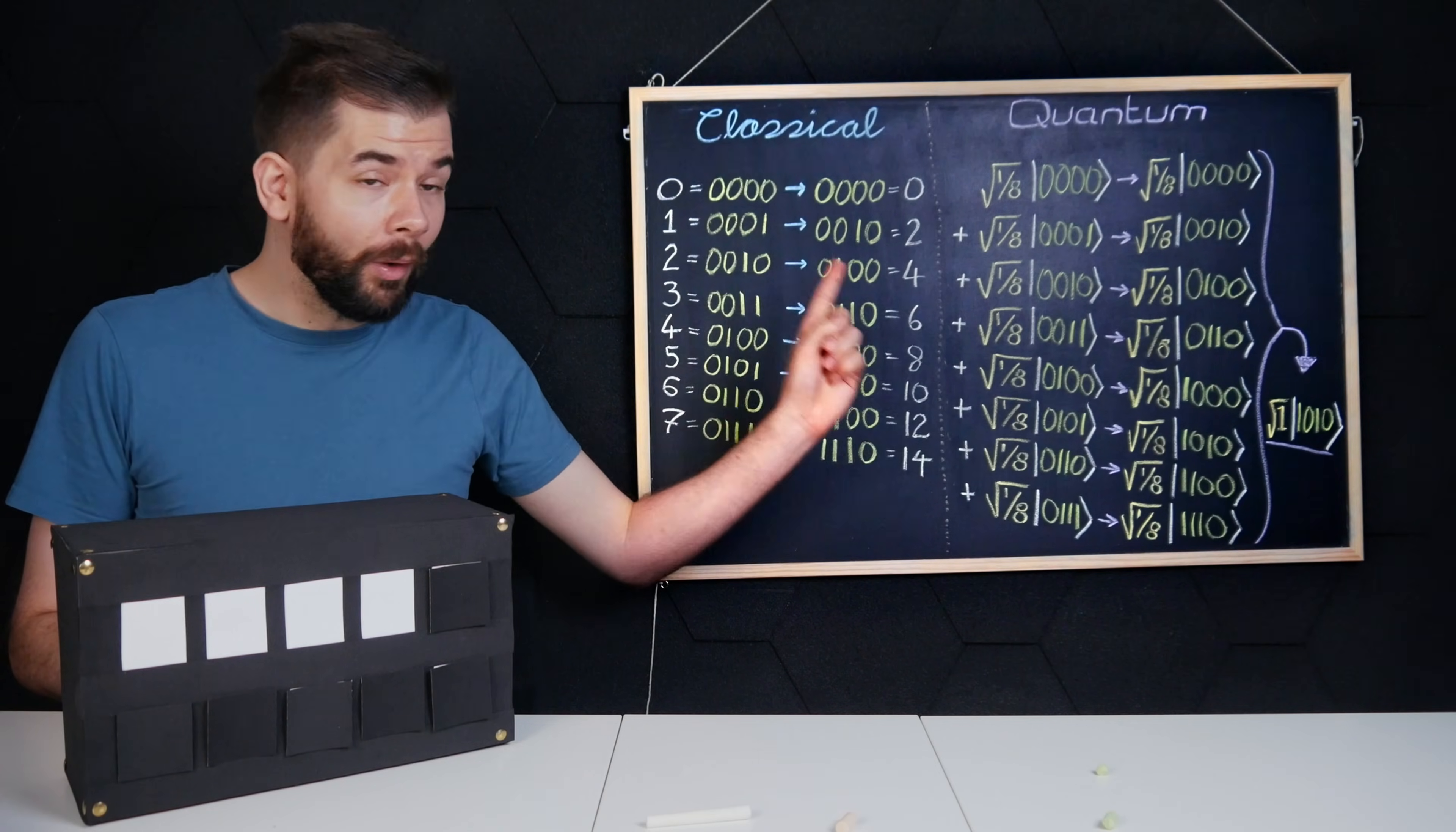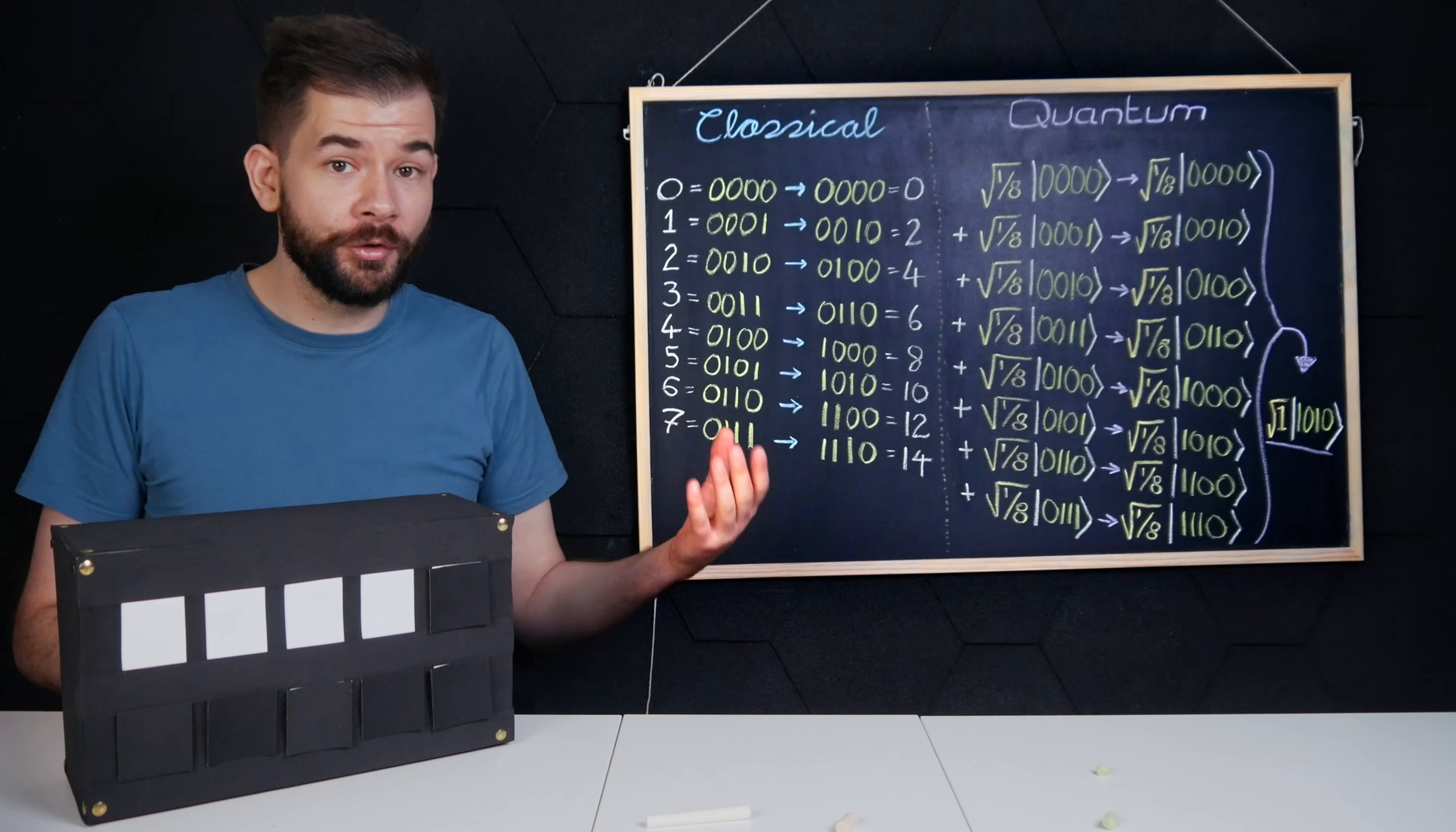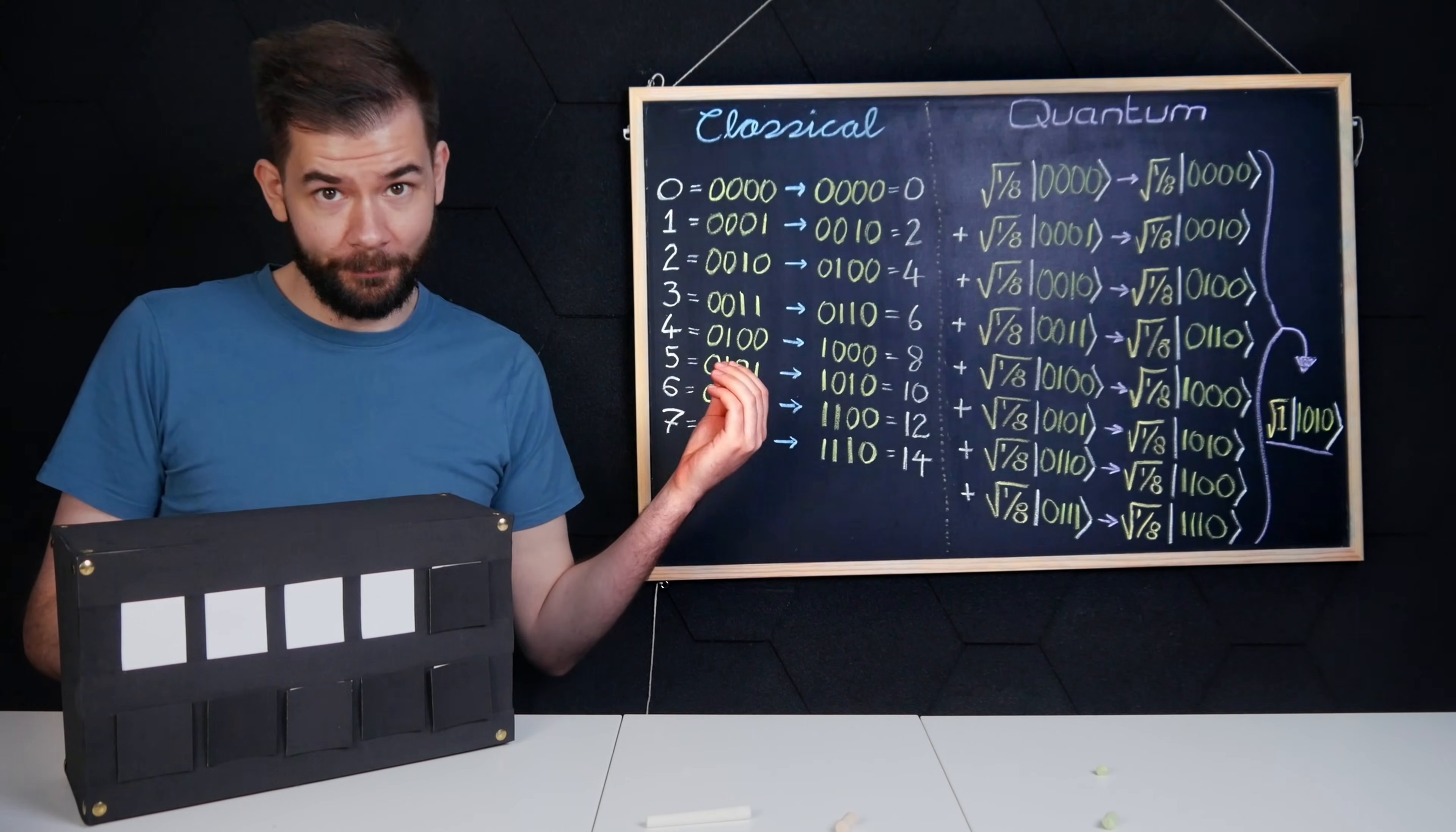Either way, I only get one answer. So to find out the doubles of all eight numbers, I'm going to have to run at least eight separate computations.